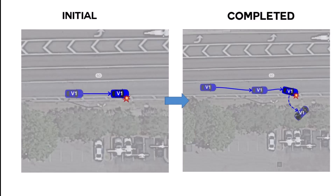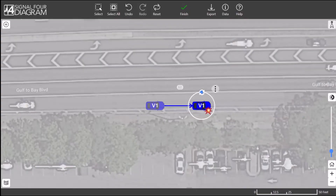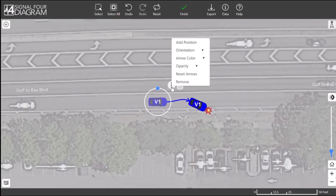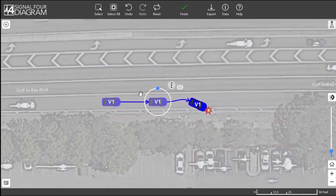Welcome to Signal 4 Diagram Training Part 2. In this video, we will cover additional capabilities of this tool. The material covered here assumes users have already watched Part 1. In this first example, the vehicle hit the curb and rolled over onto its roof. We will need to add a final position and change its orientation, and also add and reposition a prior position. To start, let's reposition the vehicles at the curb. Although vehicles generate with a prior position, you can add more prior and post positions to demonstrate the crash better.